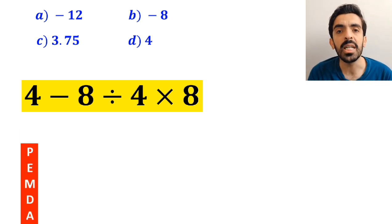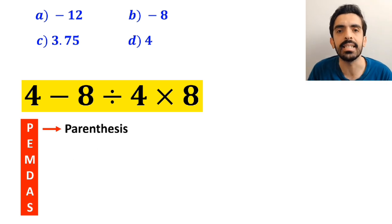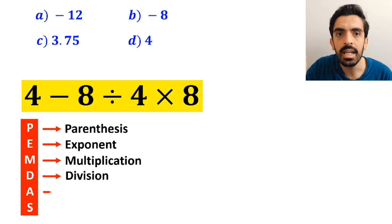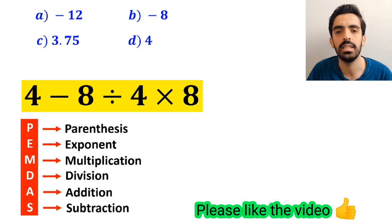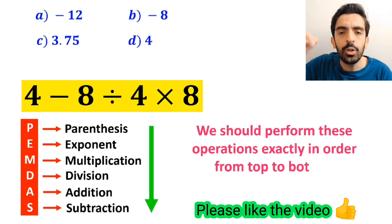To solve this problem, we must follow a rule called PEMDAS. In this rule, P stands for parenthesis, E stands for exponent, M stands for multiplication, D stands for division, A stands for addition, and S stands for subtraction. We should perform these operations exactly in order from top to bottom.